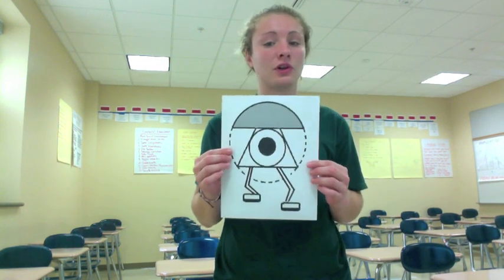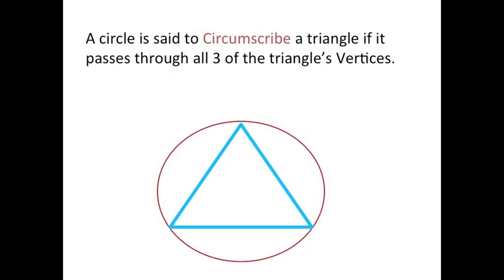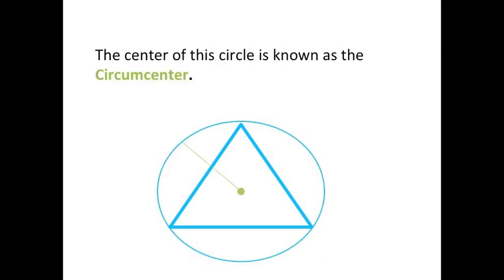The circumcenter is the third creature we'll be looking for. The circumcenter is the point at which the three perpendicular bisectors of a triangle intersect. It is the center of the circle drawn around the triangle, and this circle passes through all three vertices of the triangle. A circle is said to circumscribe a triangle if it passes through all three of the triangle's vertices, and the center of this circle is known as the circumcenter.